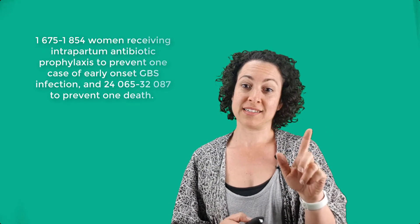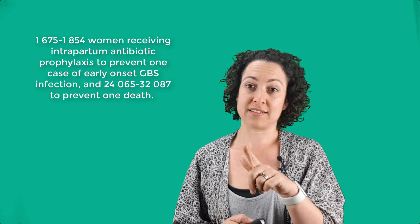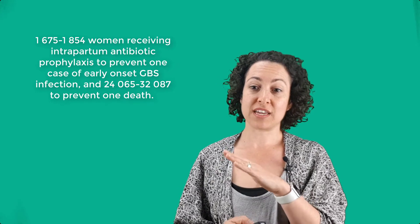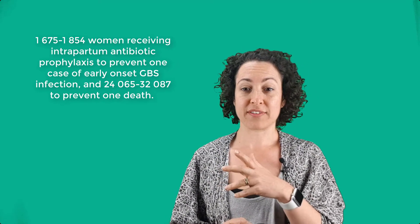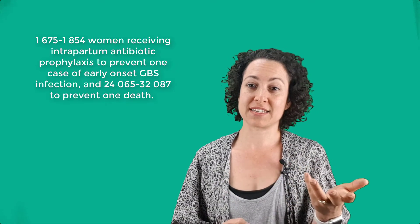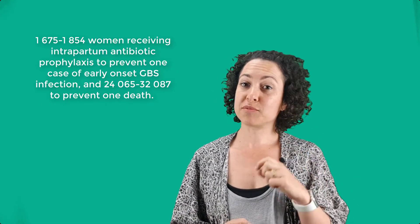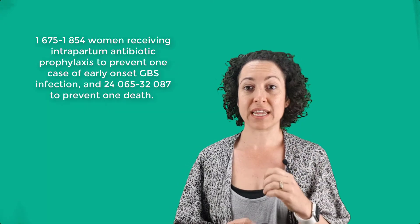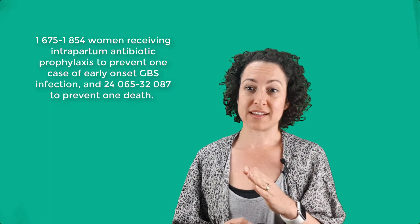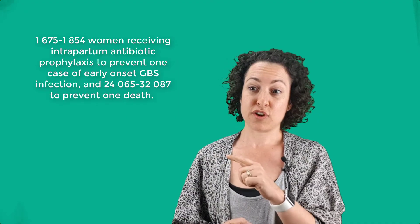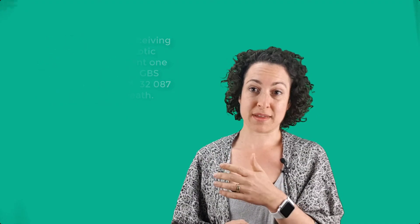So the UK National Screening Committee concluded that universal screening would result in an additional 1,675 to 1,854 women receiving intrapartum antibiotic prophylaxis in order to prevent one case of GBS infection. And in order to prevent one death, they would need to treat 24,065 to 32,087 women.